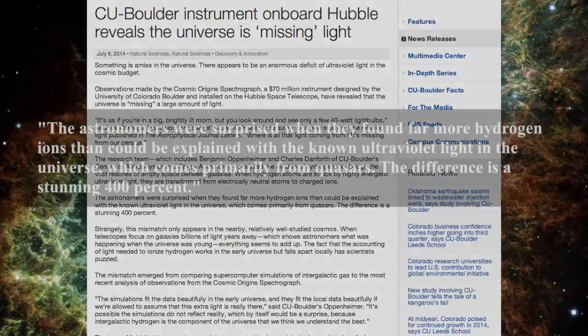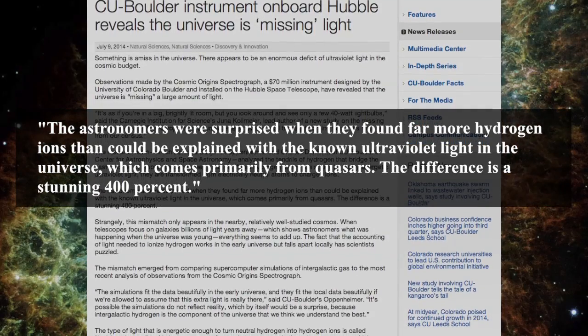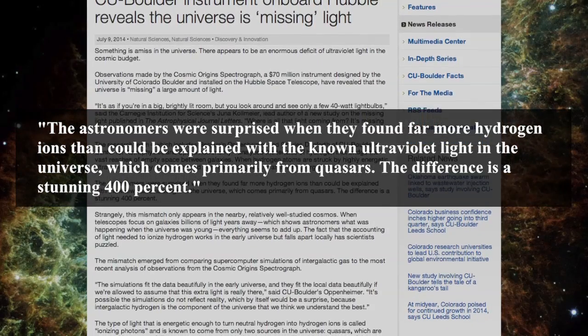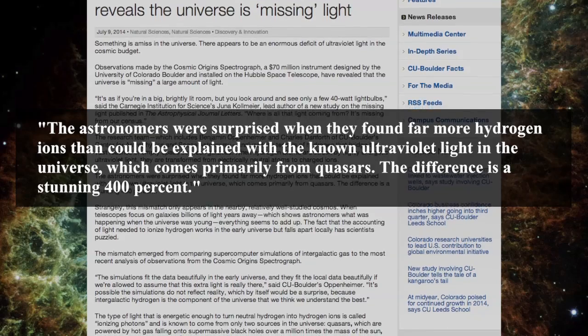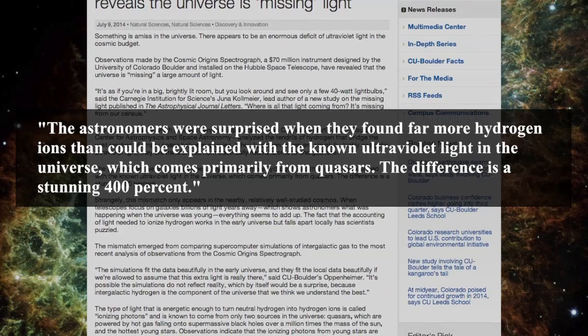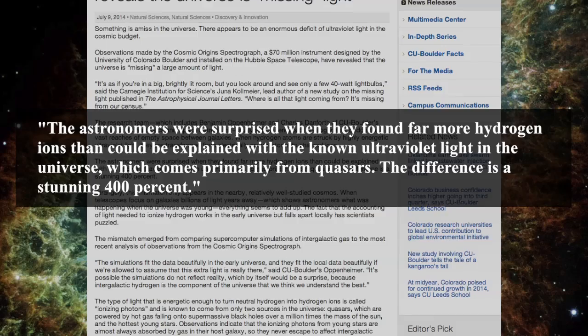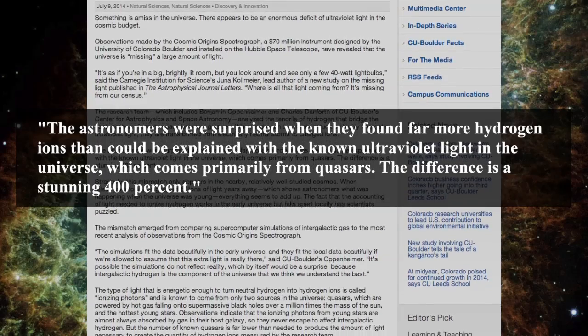But as a University of Colorado Boulder press release notes, the astronomers were surprised when they found far more hydrogen ions than could be explained with the known ultraviolet light in the universe, which comes primarily from quasars. The difference is a stunning 400%.